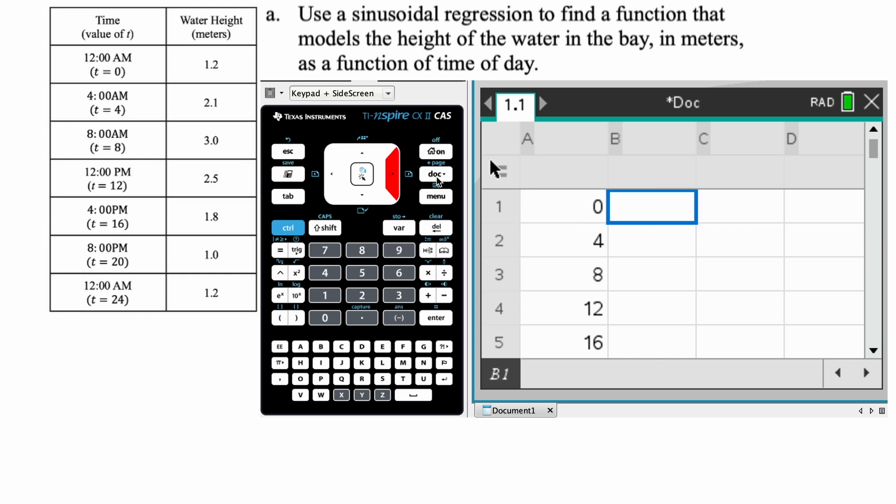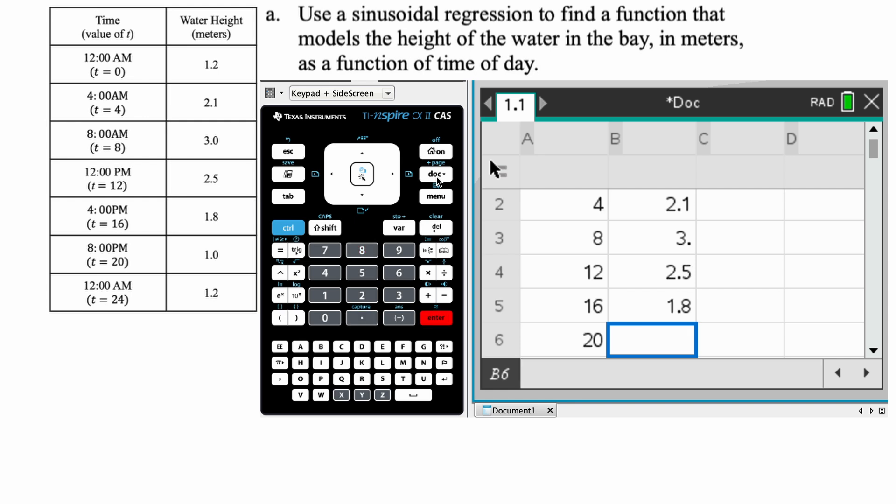Now what we're going to do in column B is we're going to put in the water height in meters. So we'll just type these numbers. 1.2, press enter, 2.1, press enter, 3.0. You don't really need the 0.0, but whatever, 2.5, 1.8, 1.0, and 1.2. Okay, so I think that's good.